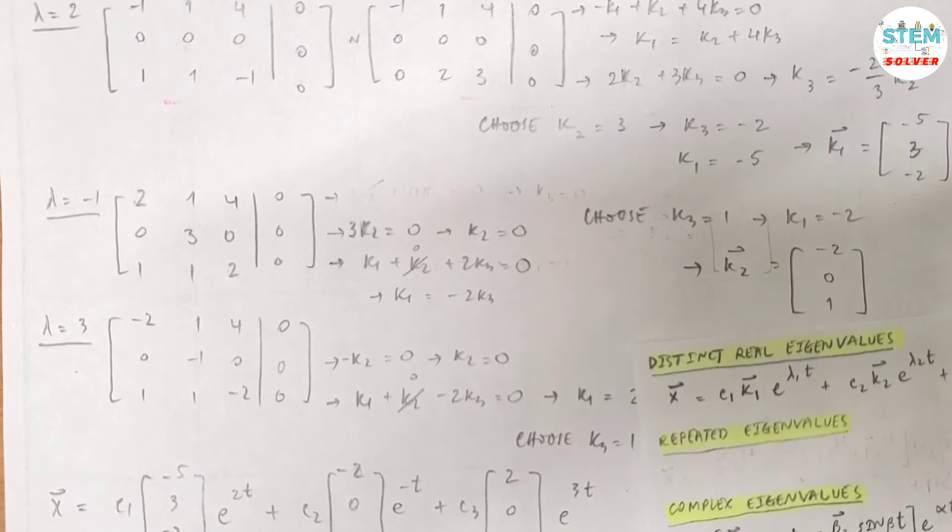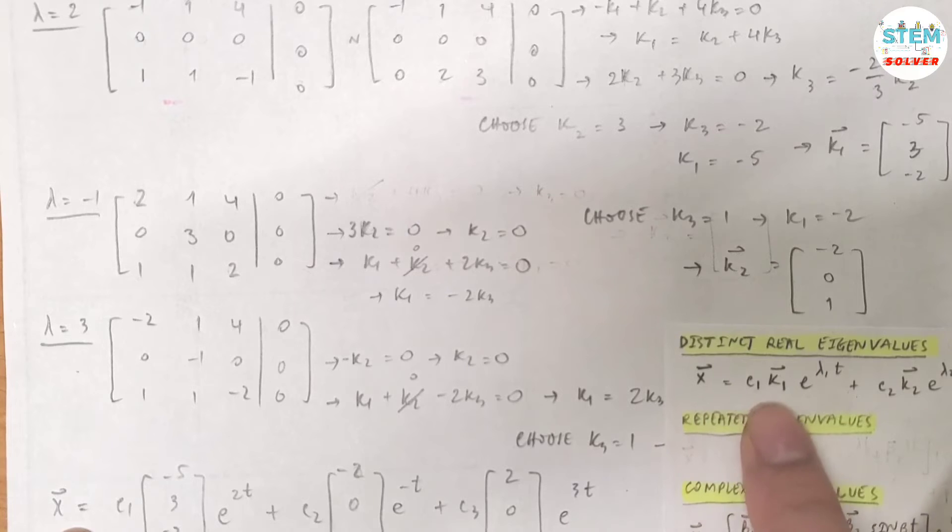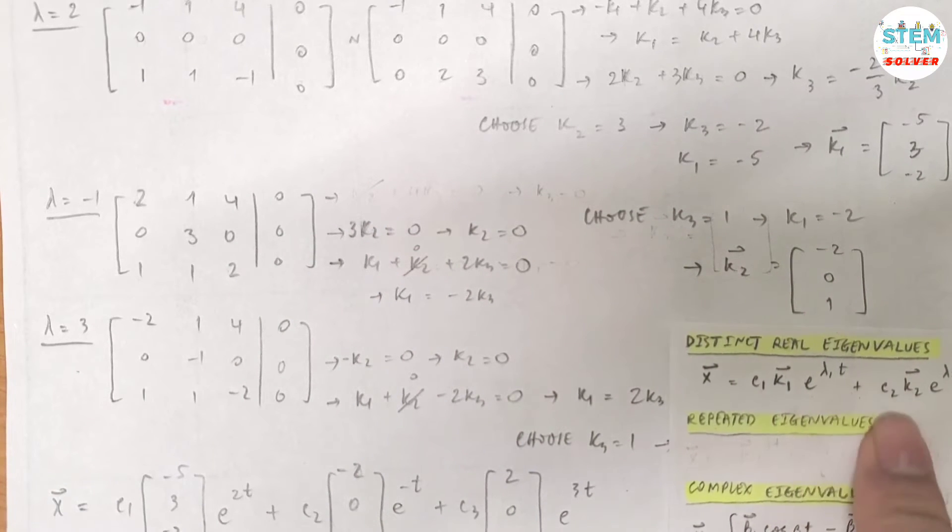Since you have three distinct eigenvalues, your final solution will begin with this form: vector x equals c₁k₁, which is this, e^(λ₁t) which is e^(2t), plus k₂ c₂ times k₂ which is this, e^(λ₂t).